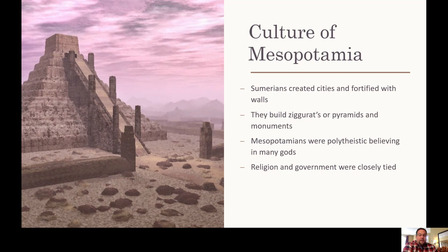What were the people like? Sumerians created cities with fortified walls. They built ziggurats — pyramids and monuments. Mesopotamians were polytheistic: 'poly' means many and 'theistic' relates to religion or gods, so they believed in multiple gods. Religion and government were closely tied together. It's not like today where different people can practice different religions — back then it was all one entity, all tied together.